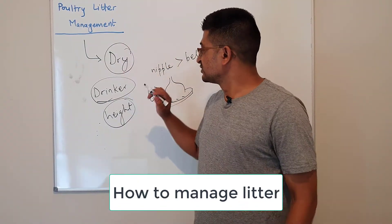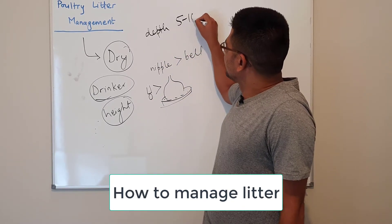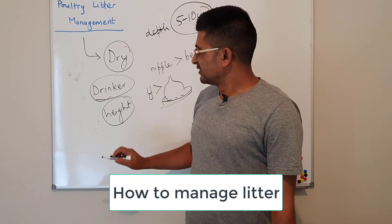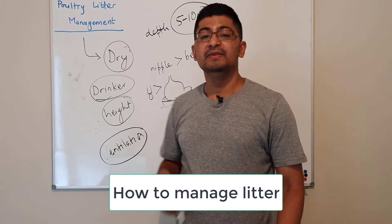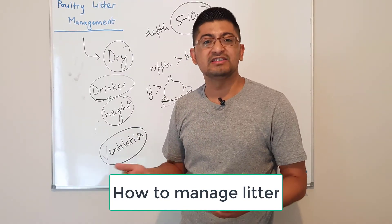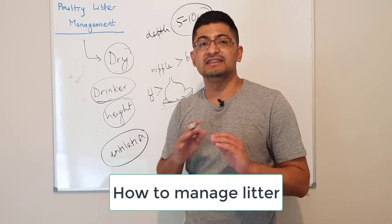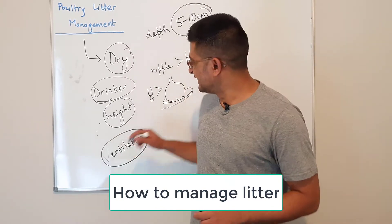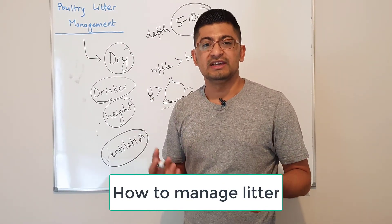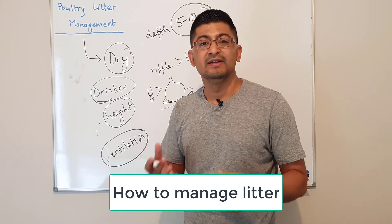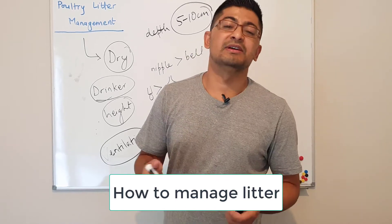The depth of litter should be optimum, between 5 to 10 centimeters. You also need to work on ventilation, which should be managed so that ammonia is low and the relative humidity inside the poultry house is between 50 to 70 percent. If it is too humid, water doesn't evaporate from the litter and litter becomes too moist. If humidity is ideal, water can be easily absorbed from the litter and that litter becomes dry over time.